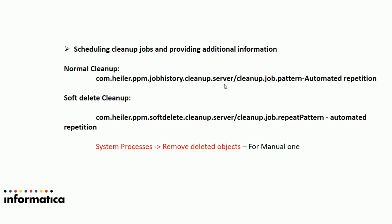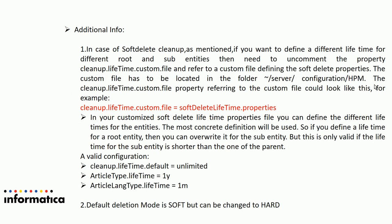For normal cleanup jobs, you can see cleanup job info and log lines in the system server log, which shows the corresponding cleanup status. You can also configure whether the normal cleanup job should run on all entities; entities that need to be hard deleted but are skipped will show corresponding info or warnings in the server log.